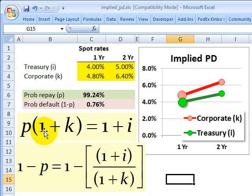Hopefully you see how this equation here becomes this equation here by dividing by 1 plus k, and then we take 1 minus to both sides, and we end up here with 1 minus P, which is the probability of default. Remember we said P is the probability of repayment, so 1 minus P is the probability of default.